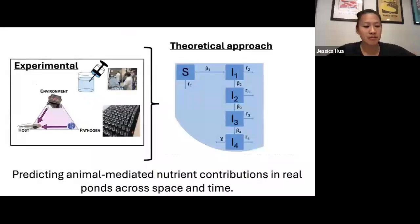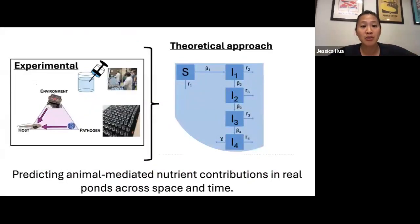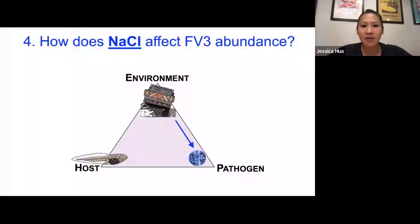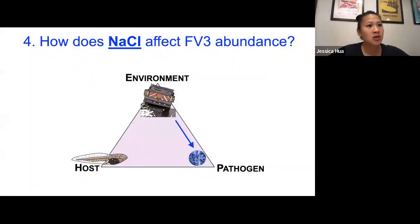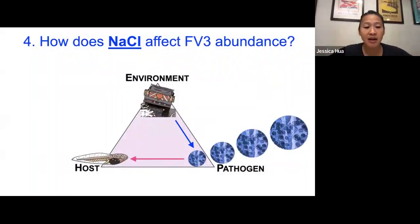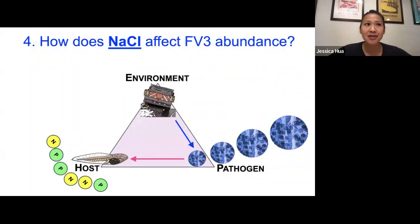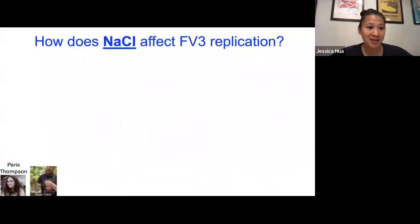To build more accurate models using experimental data, those interactions mattered. But you may be wondering about one entire side of the disease triangle I haven't addressed: the effects of pollutants on the pathogen itself. These pathogens also exist in the environment, and if salt affects Frog Virus 3 abundance or virulence, this can have cascading consequences on how sick the host gets — and then indirect consequences on nutrient release by that host. The challenge is that oftentimes we don't have methods yet developed to test these types of questions.